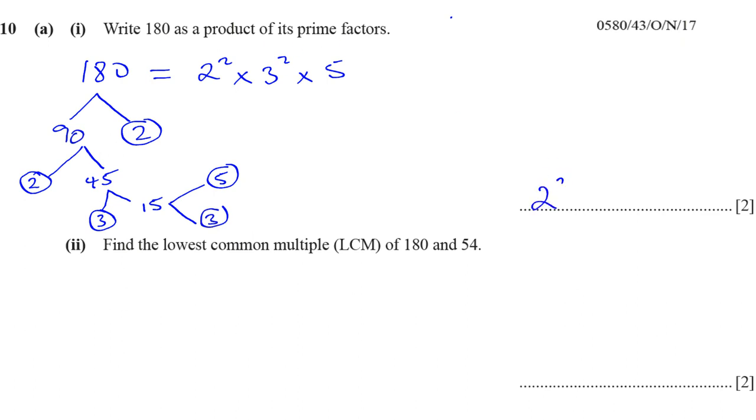Part 2. It says find the lowest common multiple of 180 and 54. There's again many ways of doing this. I'm going to first of all split 54 into a product of its prime factors and show you a few different methods.